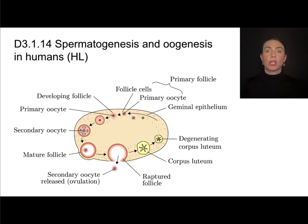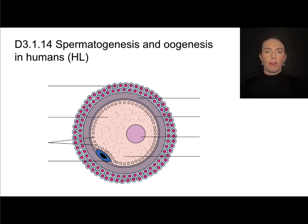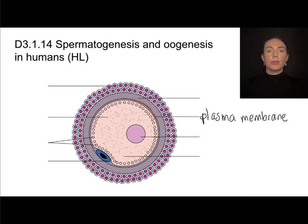To recap: we start with the germinal epithelium, go through meiosis one, and then start meiosis two during the menstrual cycle. The mature ovum has several features to point out. Just as with the sperm, we start with the plasma membrane — and this plasma membrane is what the sperm's plasma membrane will fuse with during fertilization.